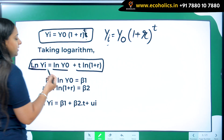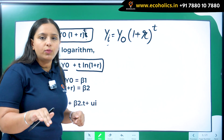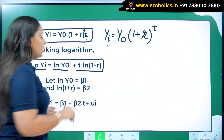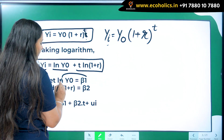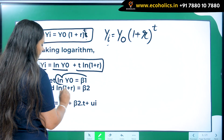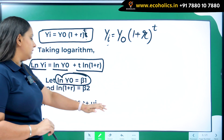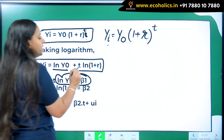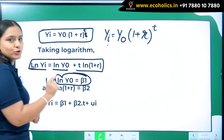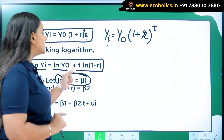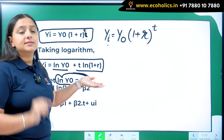I need my parameters to remain in linear form — the parameters can never be without linear form. So I'm assuming log y_i equals beta_1, so that it will become linear. Similarly, t is going to be your slope parameter because it is already linear.